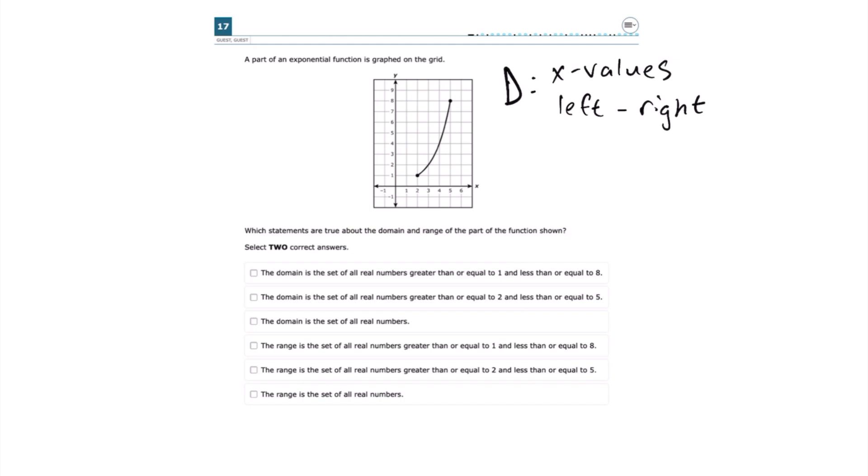We're looking at the x-axis, left to right. The range is all the possible y-values of a function or graph. The y-axis goes up and down, so on the graph, if we're looking for the range, we're looking down to up.